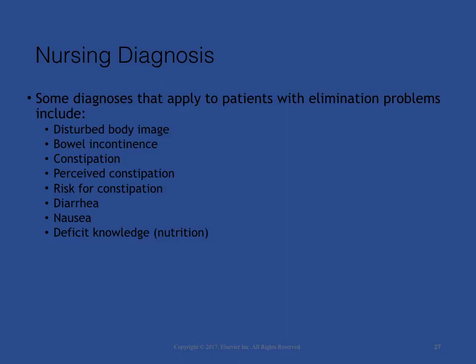The nursing assessment of the patient's bowel function reveals data indicating an actual or potential elimination problem. Nursing diagnoses that apply to patients with elimination problems include: disturbed body image, bowel incontinence, constipation, perceived constipation, risk for constipation, diarrhea, nausea, and deficient knowledge. It is important to establish the correct related-to factor for each diagnosis.